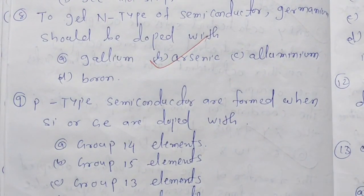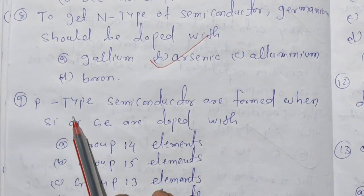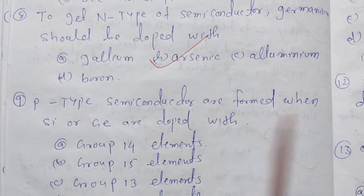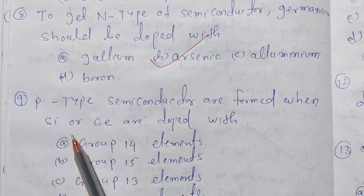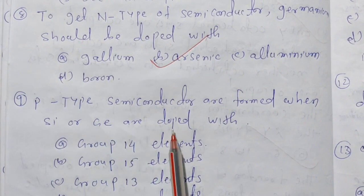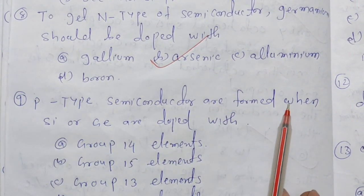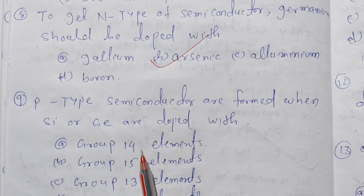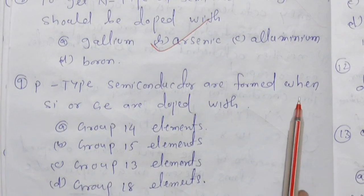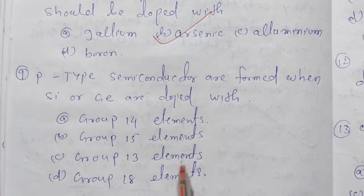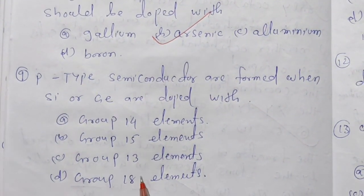Similarly, the same type of semiconductor is formed when silicon and germanium are doped with which types of element? Either group 14, group 15, group 13, or group 18 elements.